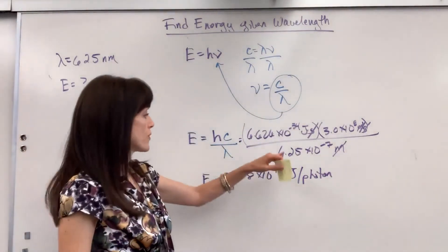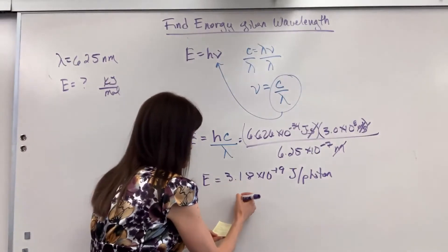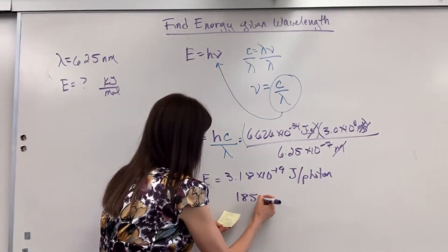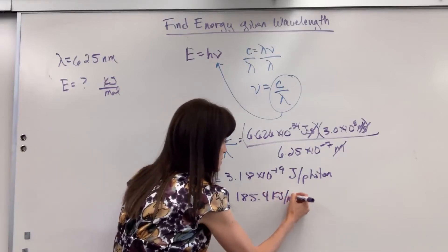And then we can go from joules to kilojoules, photons to moles, just like we did two minutes ago, and you get the 185.4 kilojoules per mole.